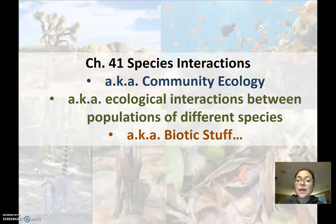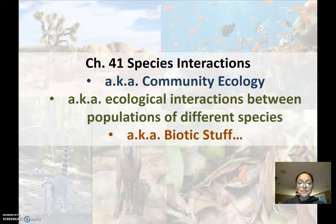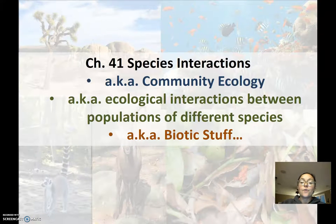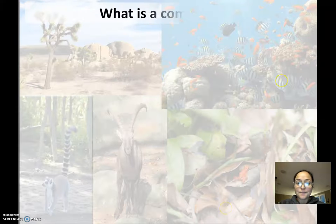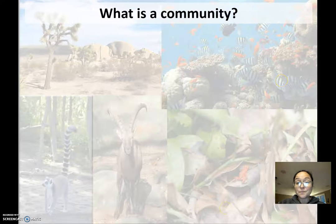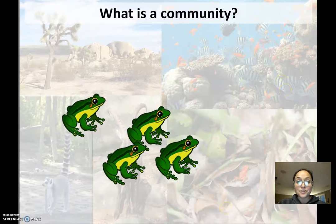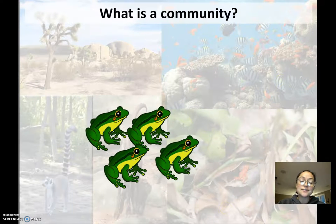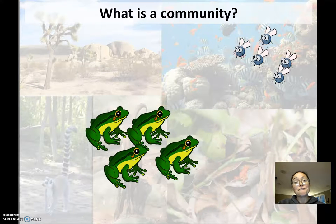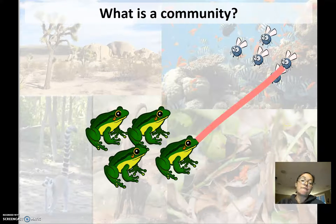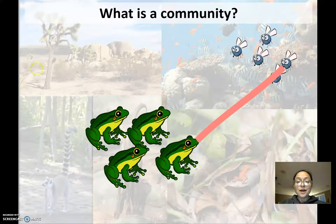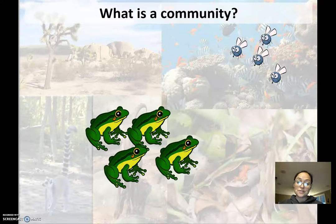In Chapter 41, we're talking about species interactions or community ecology. When we look at what is a community, here we have a population of frogs and a population of flies, and we know that frogs eat flies. That is one way that these two populations interact.